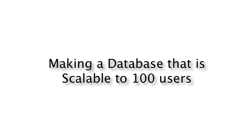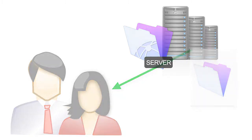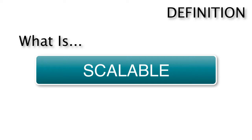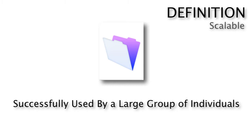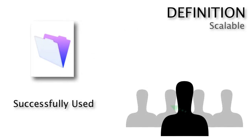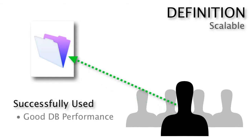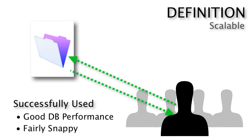In this video I want to talk about sharing your FileMaker solution with a lot of users out on a FileMaker server across the local office network or across the internet. This is known in the business as scalability — how well does your FileMaker solution scale up? When we talk about scalable solutions, we mean they are successfully used by a large group of individuals without having to wait 30 seconds or a minute for the database to respond. The database solution should have good performance and be fairly snappy.